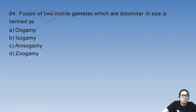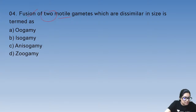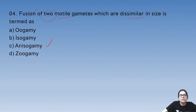Fusion of two motile gametes that are dissimilar in size — what do we call this? Good evening, my dear children. 9 days of the exam have been done, we are going to work very well. The answer is C — anisogamy, because they are dissimilar in size.